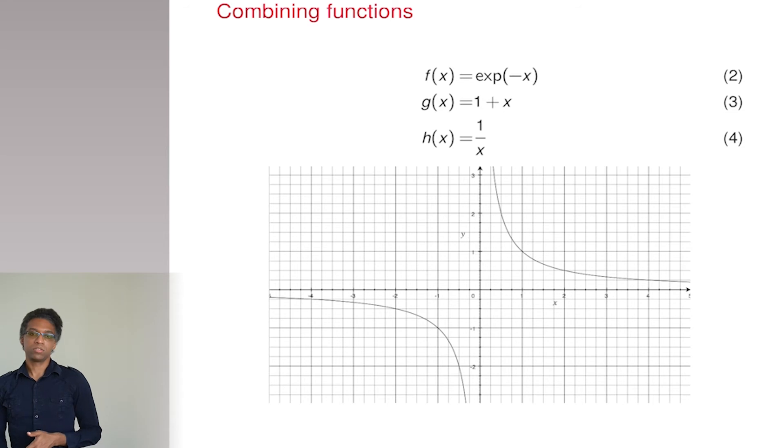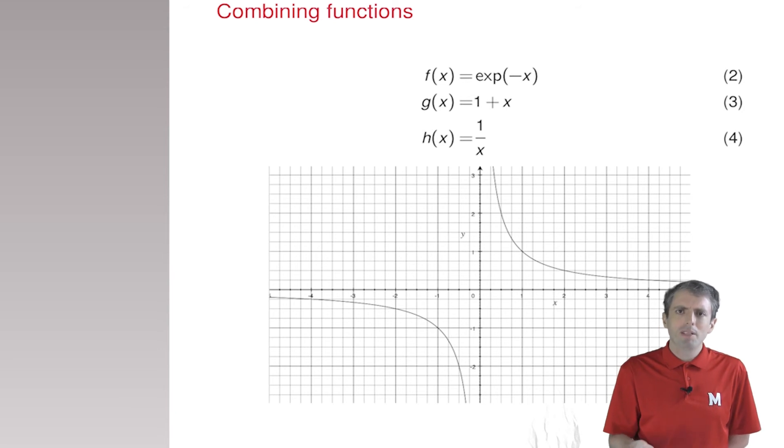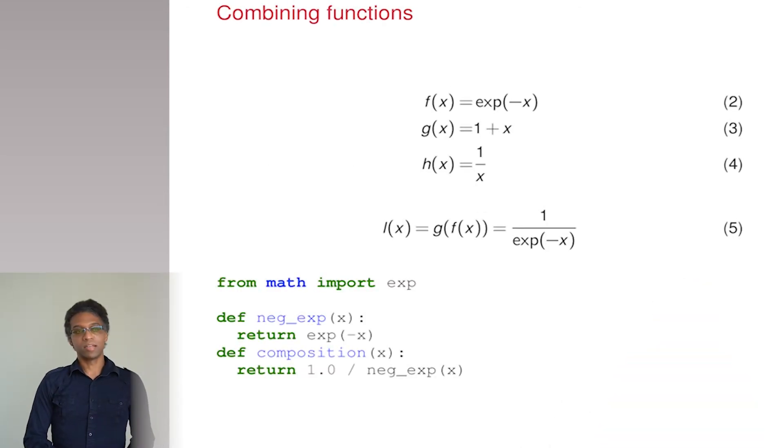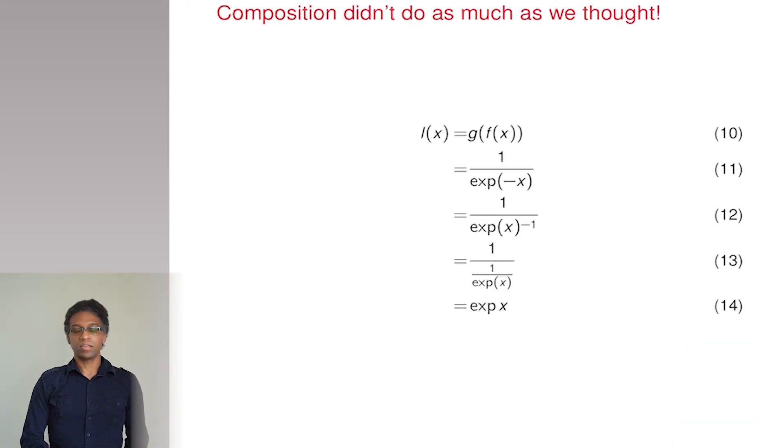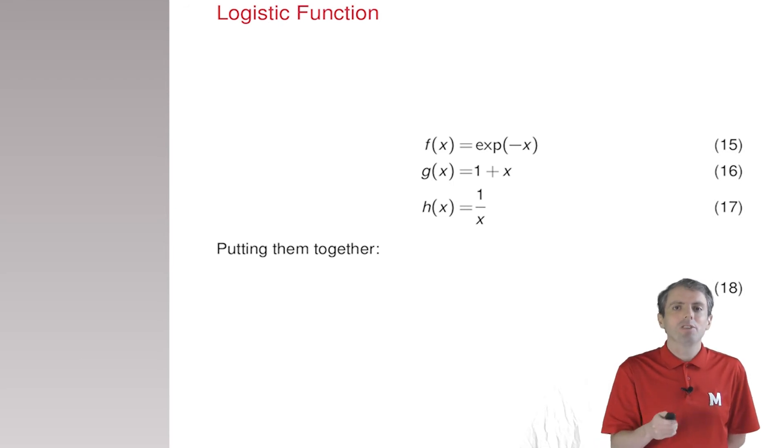So let's compose these functions to create a new function that we'll be seeing quite a bit of in the course. When we compose functions, this just means we take the output of one function to be the input of another function, right? One way to do this might be to take the exponential function of negative x to be the input of 1 over x. Yeah, you could write it in Python like this. Okay, so problem solved. The exponential function is always positive, so this never gets to zero. Not exactly. This is just the exponential function again. Huh? How? So e, or exp, negative x is the same as 1 over e to the x, and 1 over 1 over e to the x is just e to the x. Ah, okay. This would still get too big too quickly then.